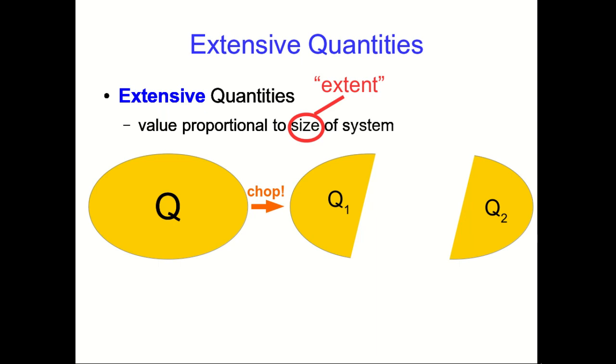Well, if the quantity we're thinking of Q is extensive, then the total Q for our original system is just the sum of the Q's for the parts of the system.